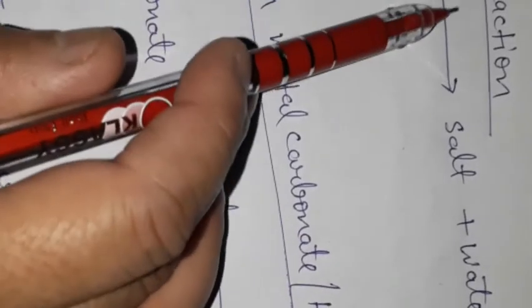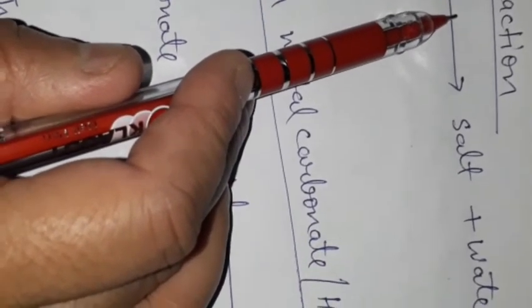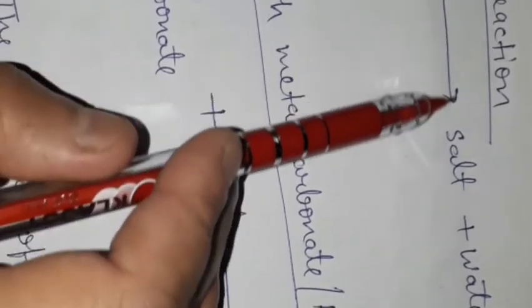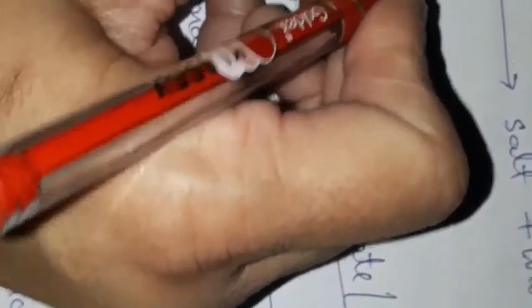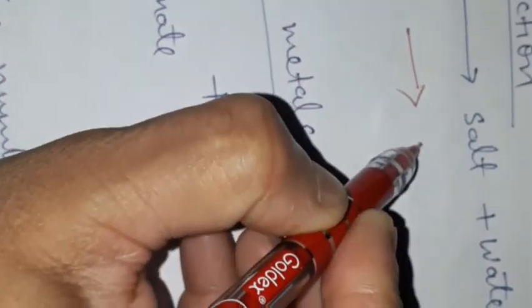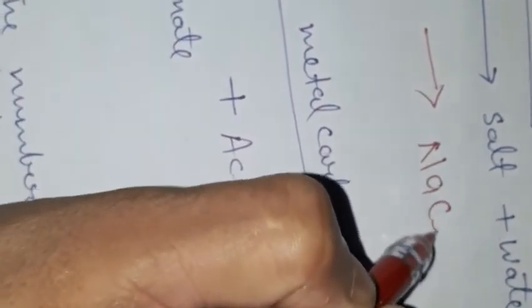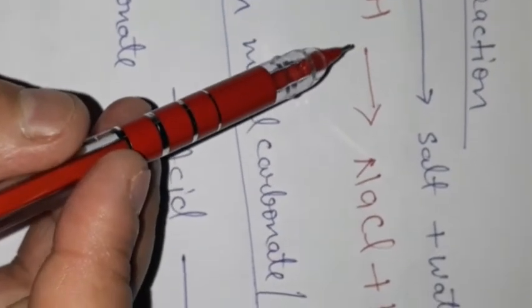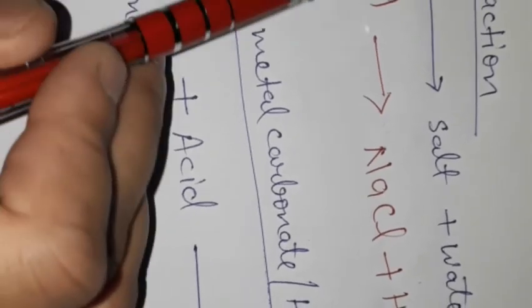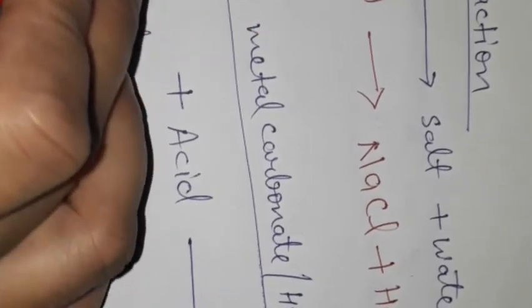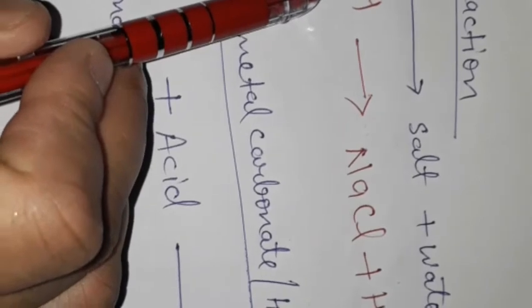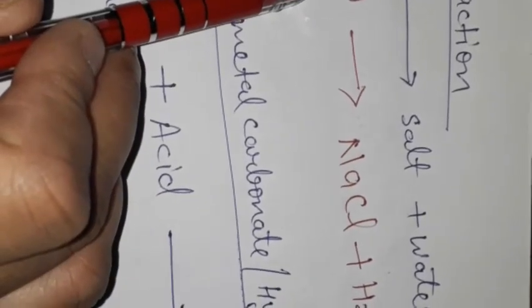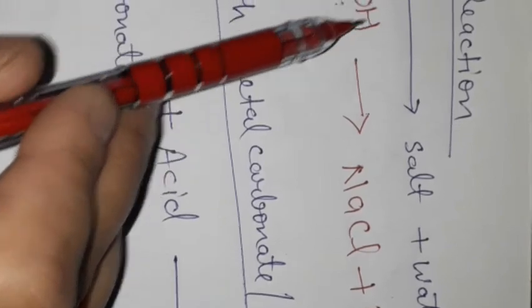The third property is the neutralization reaction. Neutralization means when acid and base react together they form salt and water. For example, HCl reacting with NaOH forms salt NaCl plus water. We call it neutralization because acid neutralizes the basic properties and base neutralizes the acidic properties — both neutralize each other. This is the neutralization reaction.